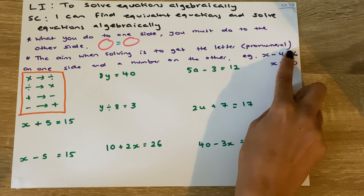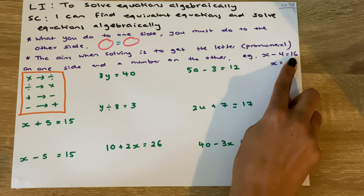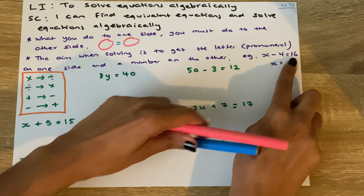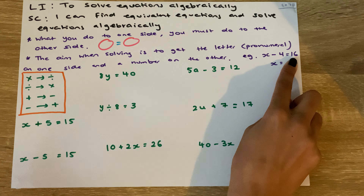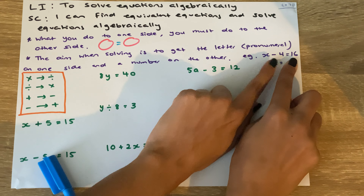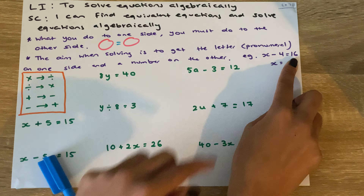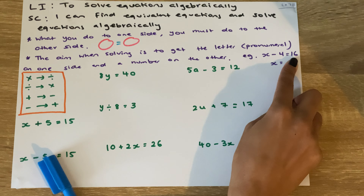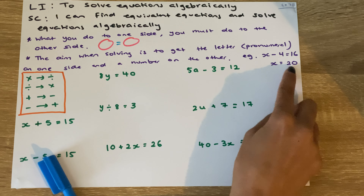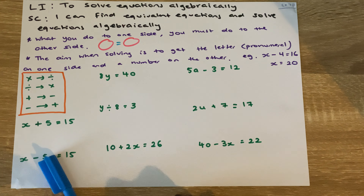An example equation is x take away 4 equals 16. What we want to do is figure out what x is. Off the top of our head, we could ask: what number take away 4 gives us 16? Most of us can work out that 20 take away 4 equals 16. But we want to figure out algebraically how we get that 20.